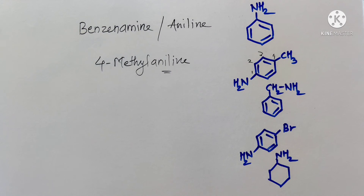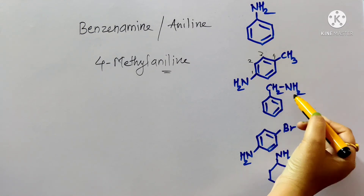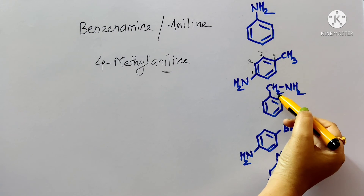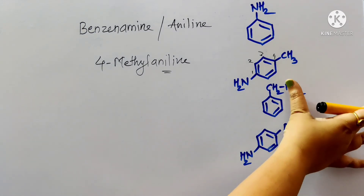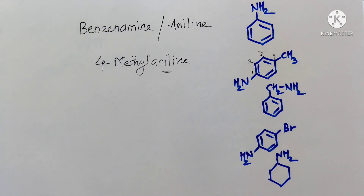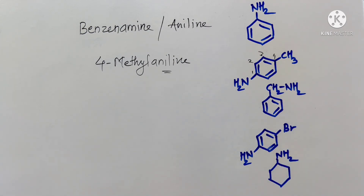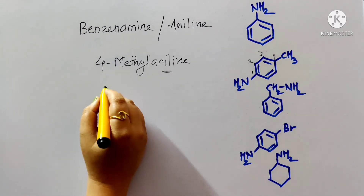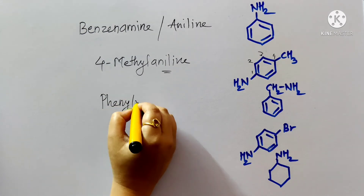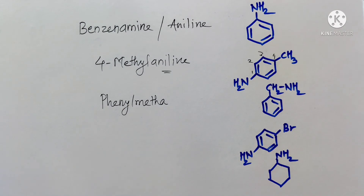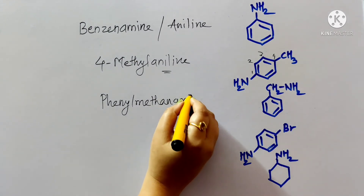When an amino group is attached to a benzyl group, the common name is benzylamine. For the IUPAC name, the CH₂ group is treated as phenylmethane (toluene), and replacing one hydrogen with an amino group gives the IUPAC name phenylmethanamine.